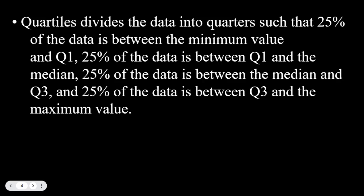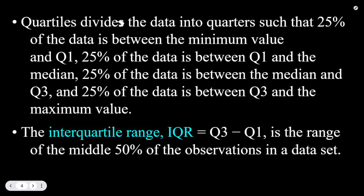Quartiles divide the data into quarters such that 25% of the data is between the minimum value and Q1, 25% between Q1 and the median or Q2, 25% between the median and Q3, and 25% between Q3 and the maximum value. The interquartile range, abbreviated IQR, equals Q3 minus Q1—the range of the middle 50% of the observations in your data set.